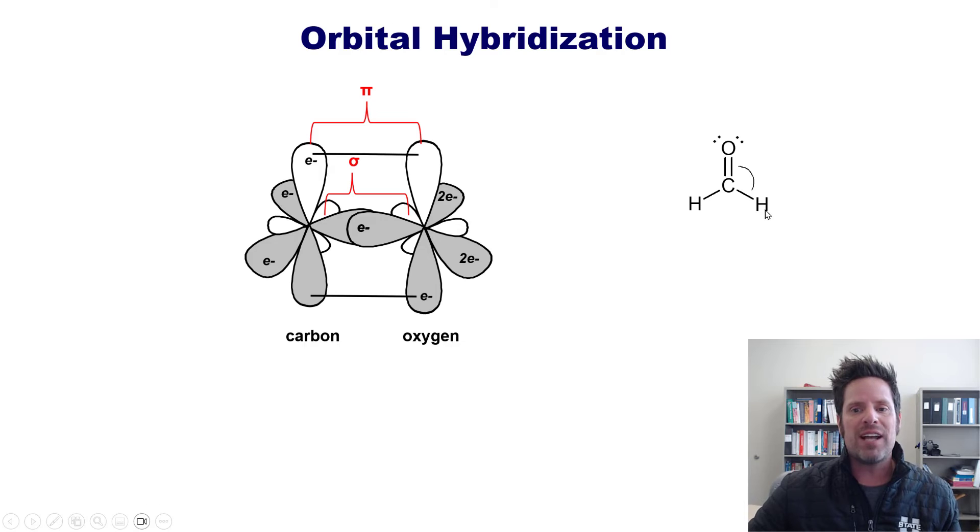What's left over then is the two hydrogen atoms to come in and form sigma bonds by overlapping their s orbitals with the sp2 orbitals on the carbon. That then is a molecular orbital depiction of our formaldehyde molecule. Isn't that neat?